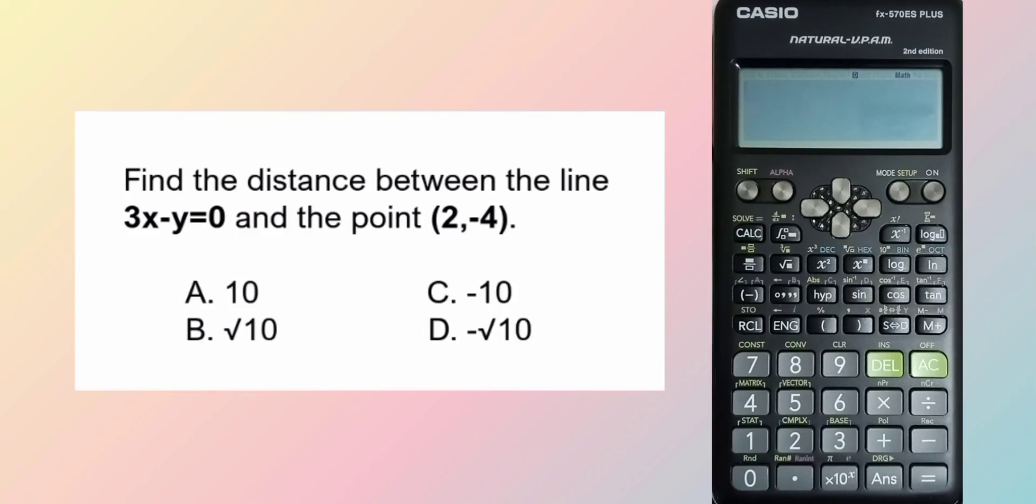Find the distance between the line 3x minus y equals 0 and the point (2, negative 4). So we are to find the distance between the line and a point. So what is our formula?